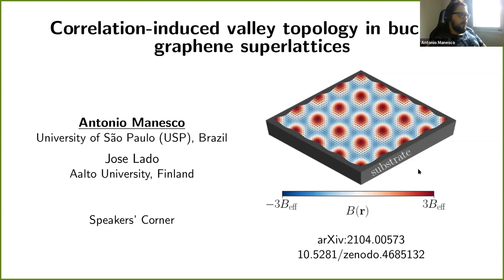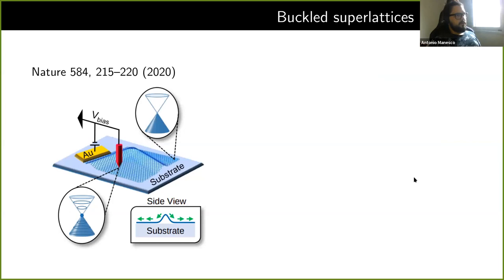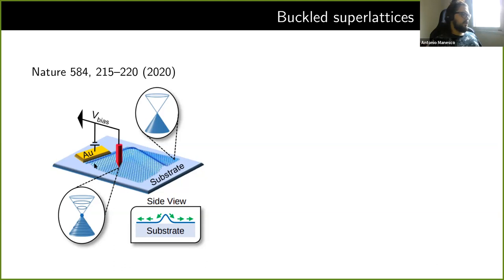Before I go to the theory part, let me explain a bit about the experimental motivation for this work. This is work done by the group of Evandra, where they created buckled graphene superlattices. The main idea is that they create these bumps in graphene, and for this structure to relax it actually leads to a lot of in-plane strain. So we can imagine that this buckle is trying to go down, adding a lot of strain in the flat region. Here's the microscopy of the system — ridge one and ridge two are those two bumps you see in the illustration.